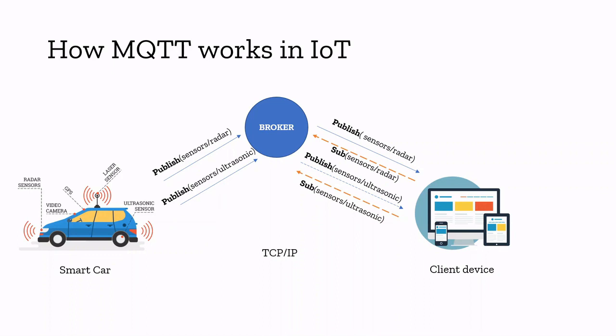That's how MQTT works in a real-world scenario. The smart car and the broker — meaning the client and the server — will always try to keep the connection open as long as possible. The smart car will always send a frequent ping request to the broker in order to ensure that the connection is always open and to ensure the quality of service.